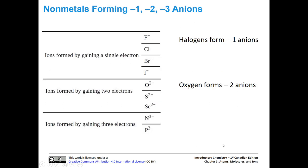Here are our anions — these are all non-metals. In the first group, halogens form negative one anions. If you look at group 17 on the periodic table, the halogens are in that column and characteristically gain one electron, giving them a negative one charge. If they gain two electrons, they form a two minus anion — sulfur and selenium are in that group. Some elements gain three electrons characteristically, including nitrogen and phosphorus.